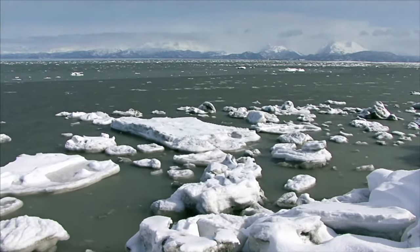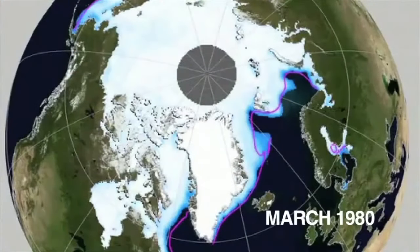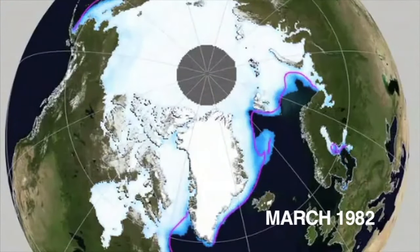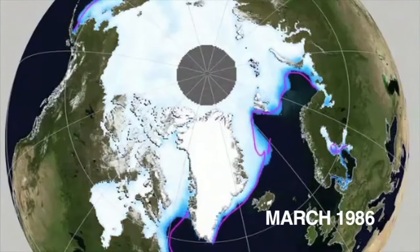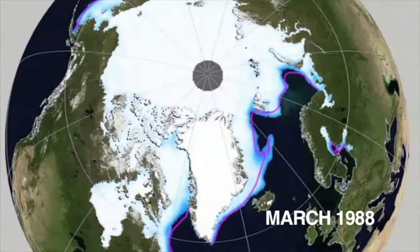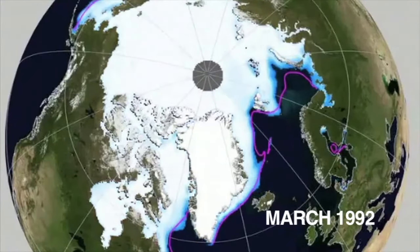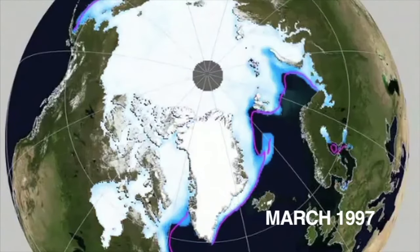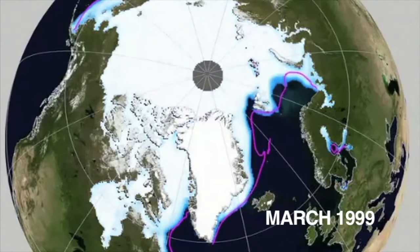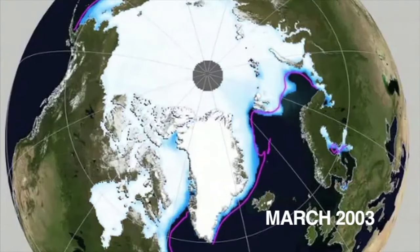Scientists closely monitor the cryosphere and, in particular, polar ice. During the winter, the top layer of the ocean near the North Pole is frozen solid. In summer, some of the ice melts. Observation satellites show that since 1979, the amount of ice remaining at the end of summer has been getting smaller and smaller, about 7.5% per decade. Sea ice is an important measure of our planet's health.